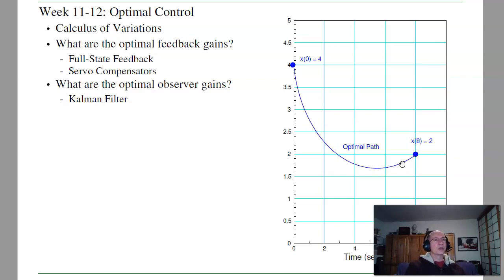So with optimal control, we'll cover calculus of variations, how to find the optimization of a function. Optimal control, what are the optimal feedback gains given a cost function, both without and with the servo compensators. That also works with observers. I might want to find out what's the optimal observer. And that leads to Kalman filter.